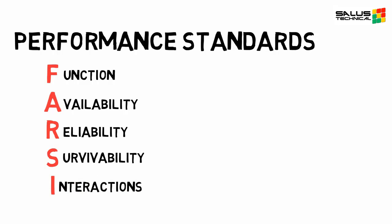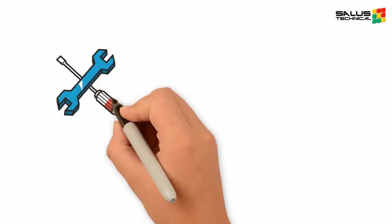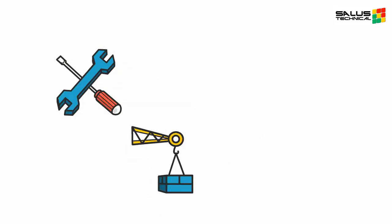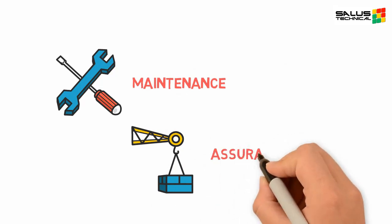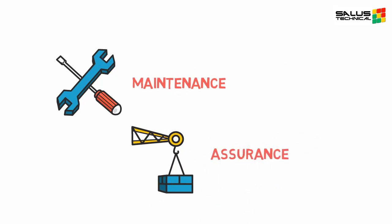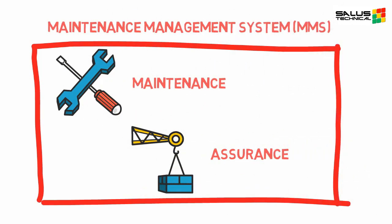We must ensure that SECIs remain fit for purpose throughout the life of an installation, and function when required to do so. We do this by conducting routine maintenance, as well as assurance, where we test specific parts of the SECI's functionality. Results of these are recorded within the maintenance management system. Every maintenance and assurance activity should have a clearly defined failure criteria, which we usually define within the performance standards.